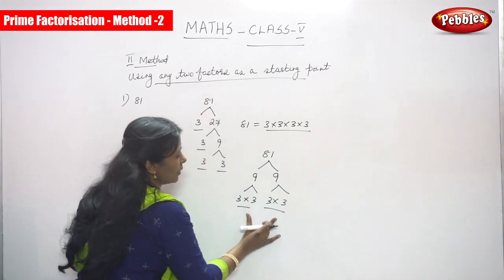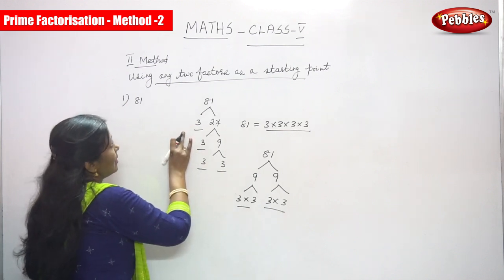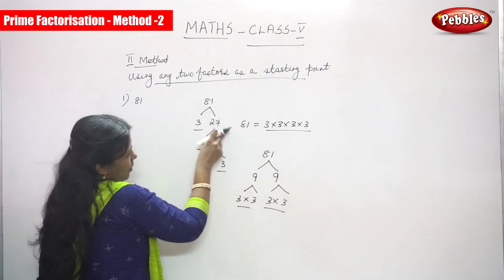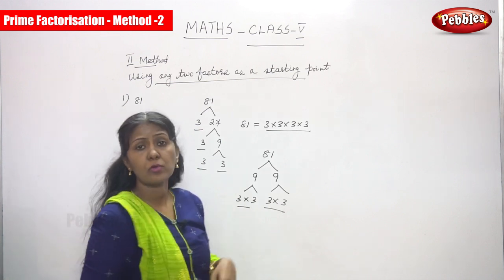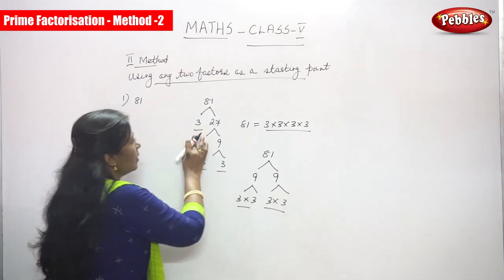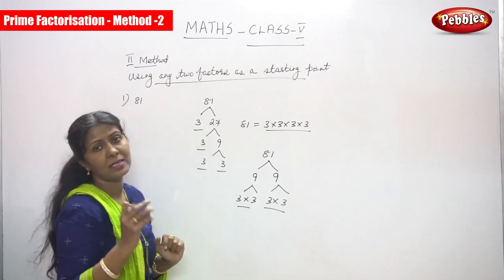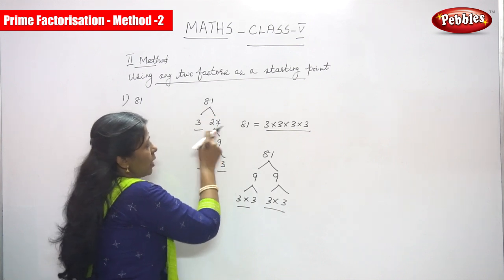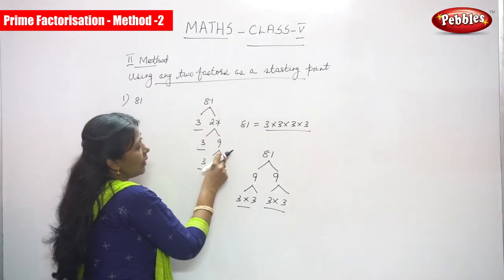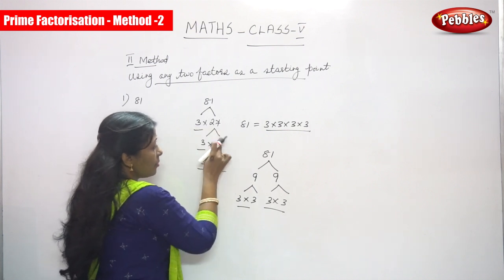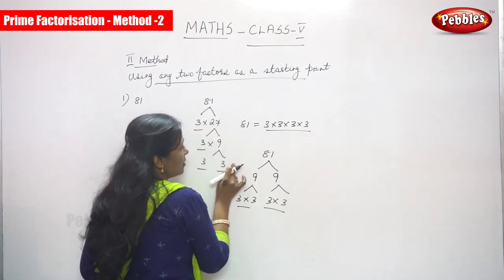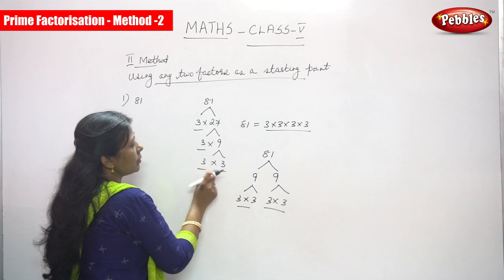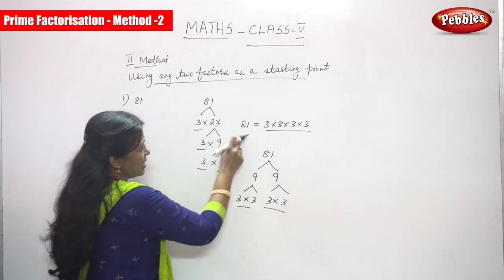So 3 into 3, 3 into 3 you have to take it as it is. So first we have to take using any two factors, in this 81 we have to take 3 and 27. 3 is also a smallest number, but compared to 2, 2 is a very smallest number than 3. So 3 into 27, after 27 you have to take the factor of 27, 3 into 9. Again, 9 you have to take it as a factor, so 3 into 3 you will get 9.